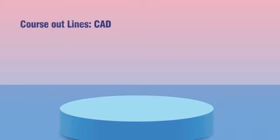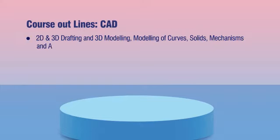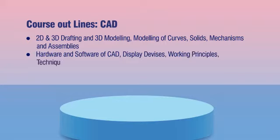The course outlines of Computer Aided Design include: 2D and 3D drafting, 3D modeling, modeling of curves, tools, solids, mechanics and assemblies, and hardware and software of CAD.